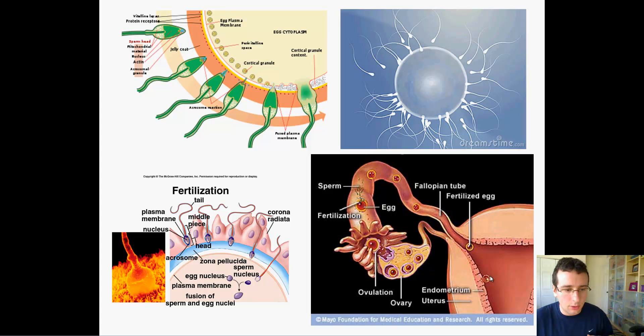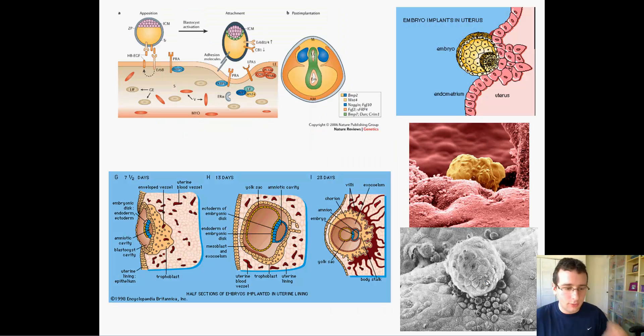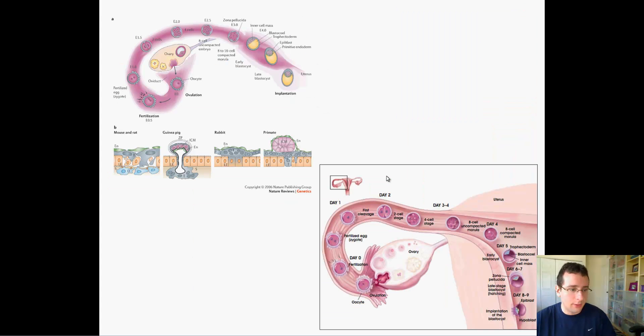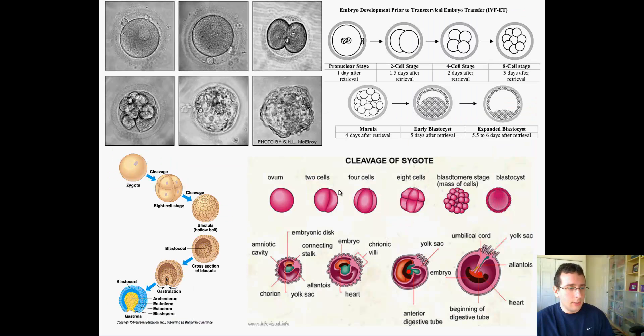Otherwise, it will not undergo differentiation fast enough to successfully implant with the endometrium of the uterus. We talked about implantation, which is the process of attaching itself to the uterine wall that had been prepared during the menstrual cycle. We also talked about the stages of the formation of the embryo.